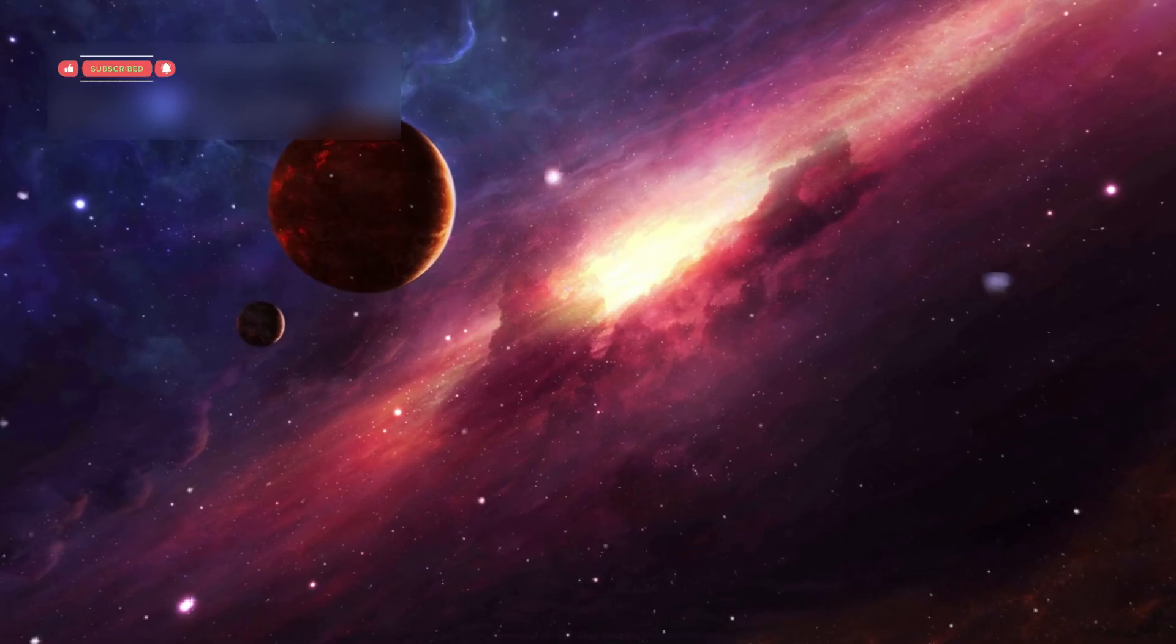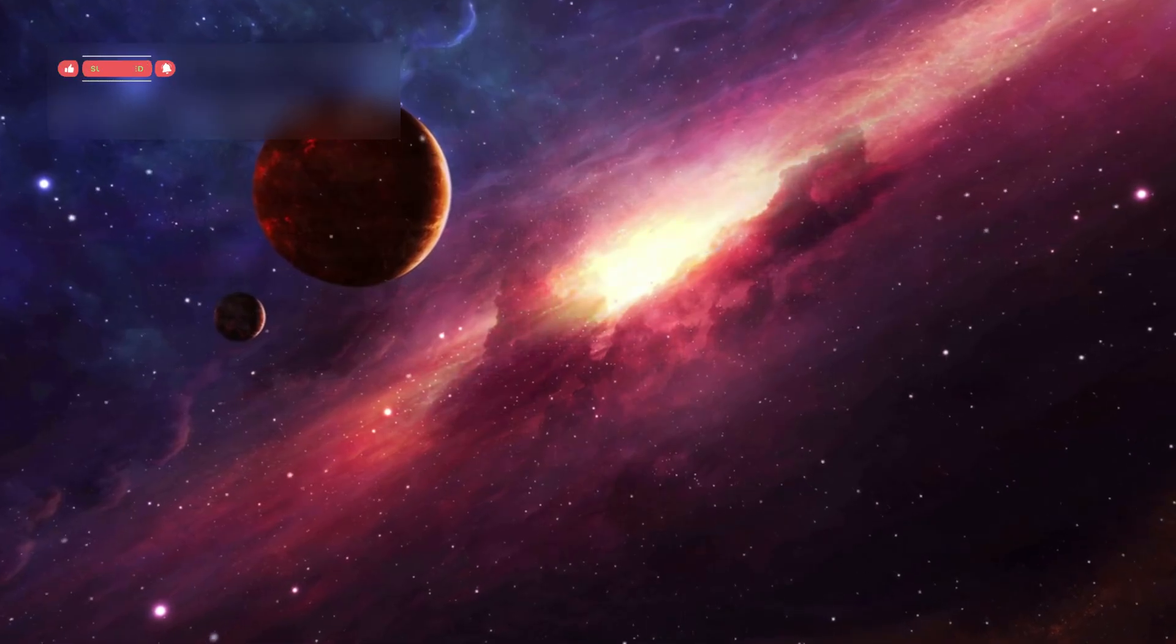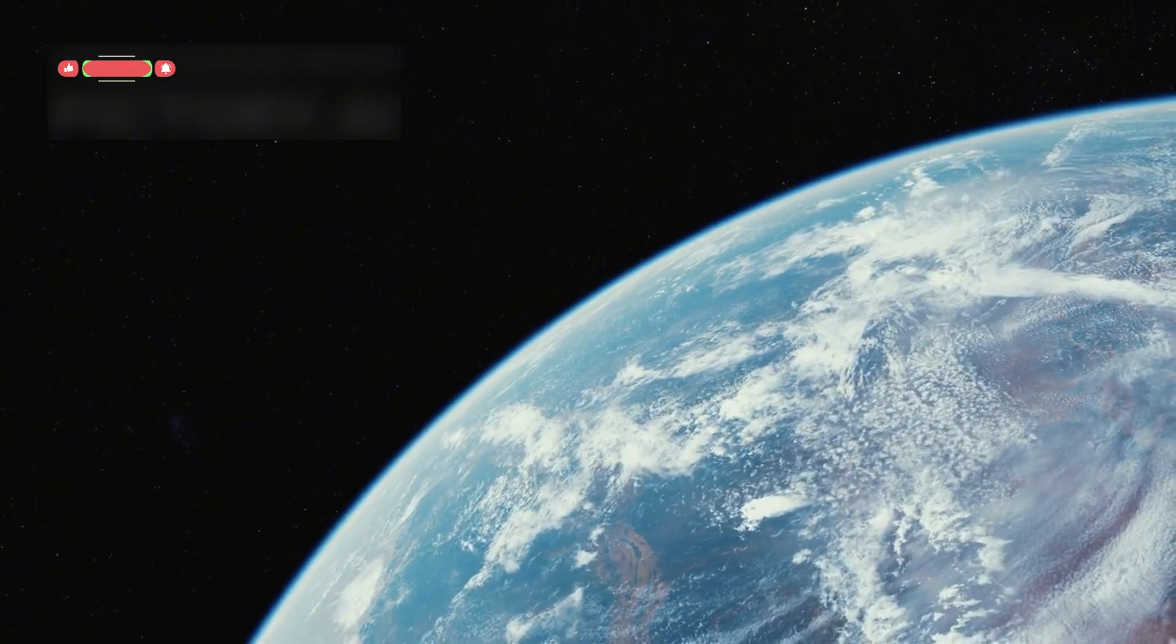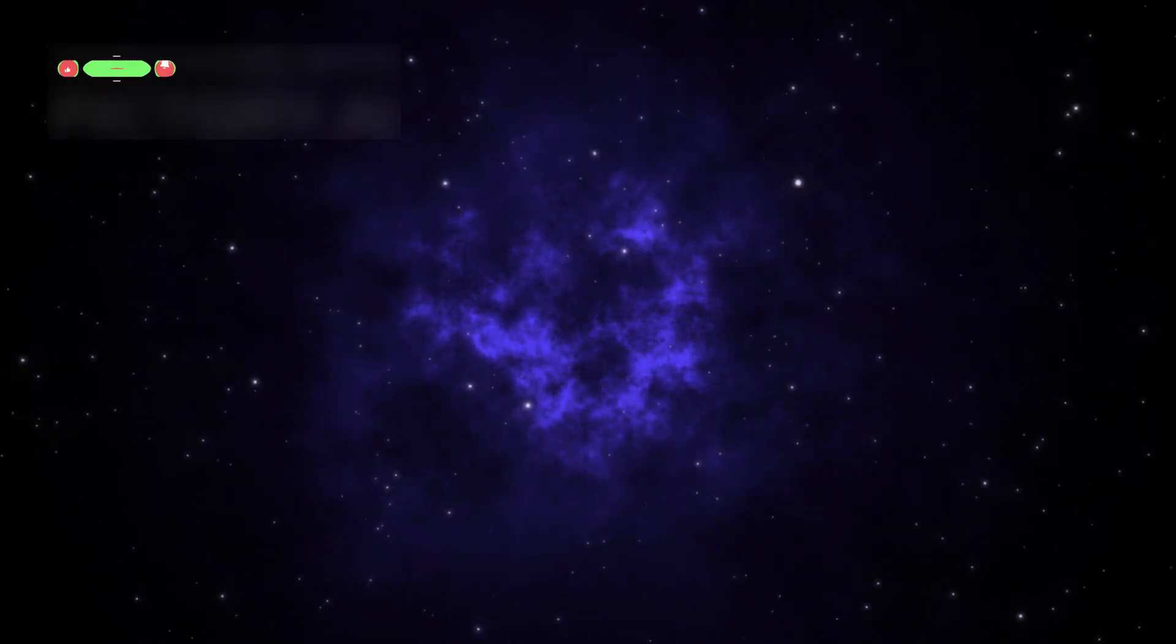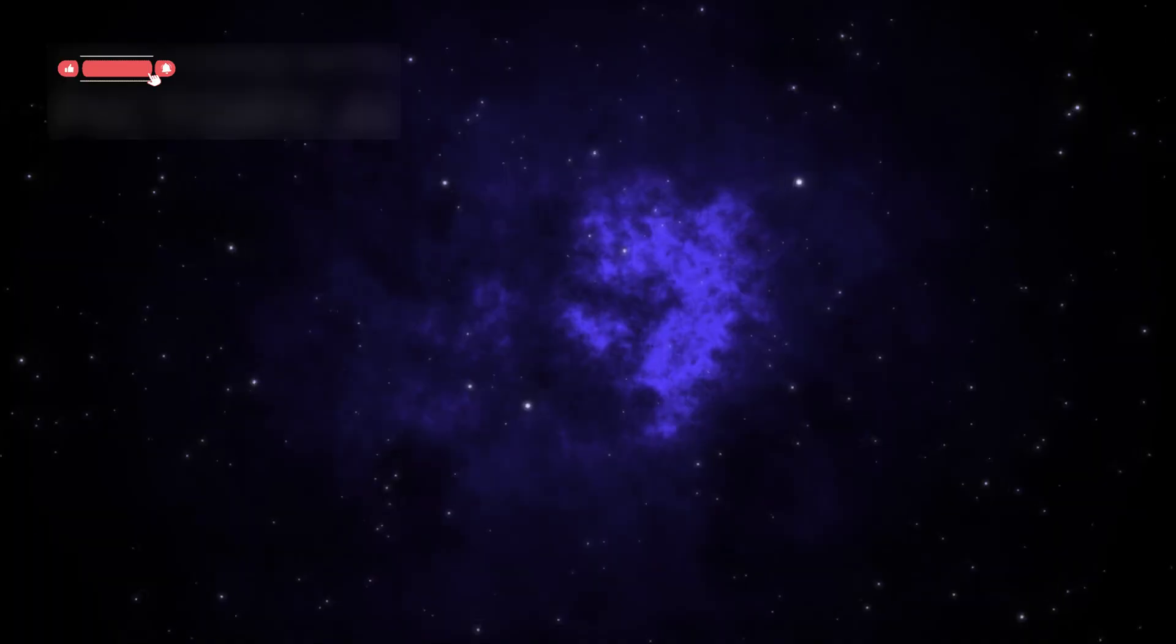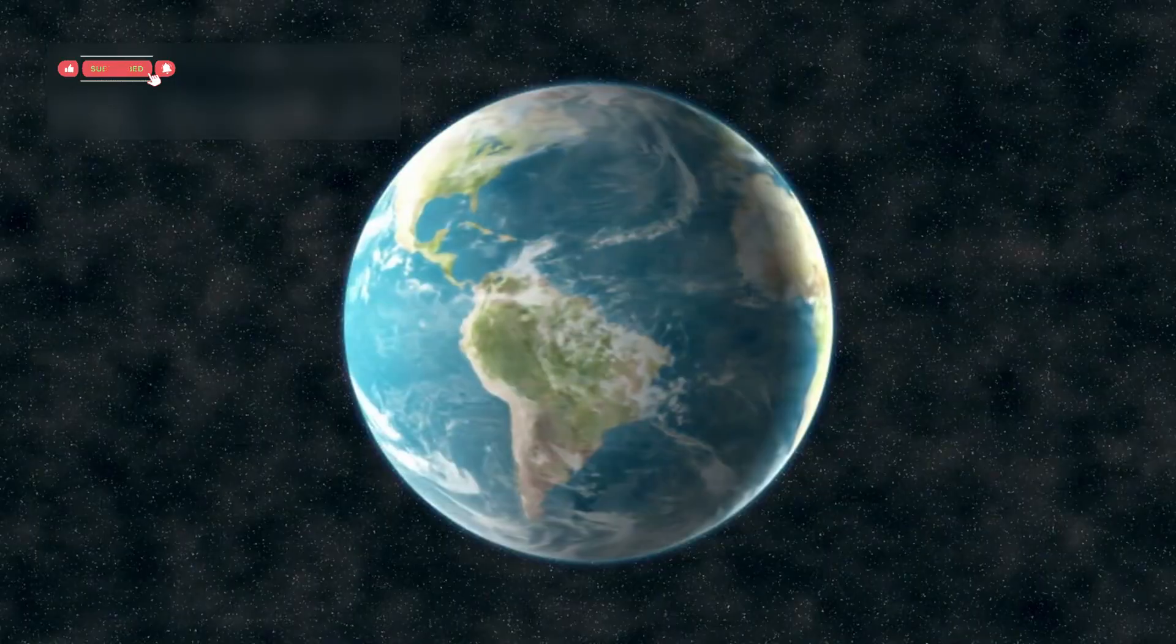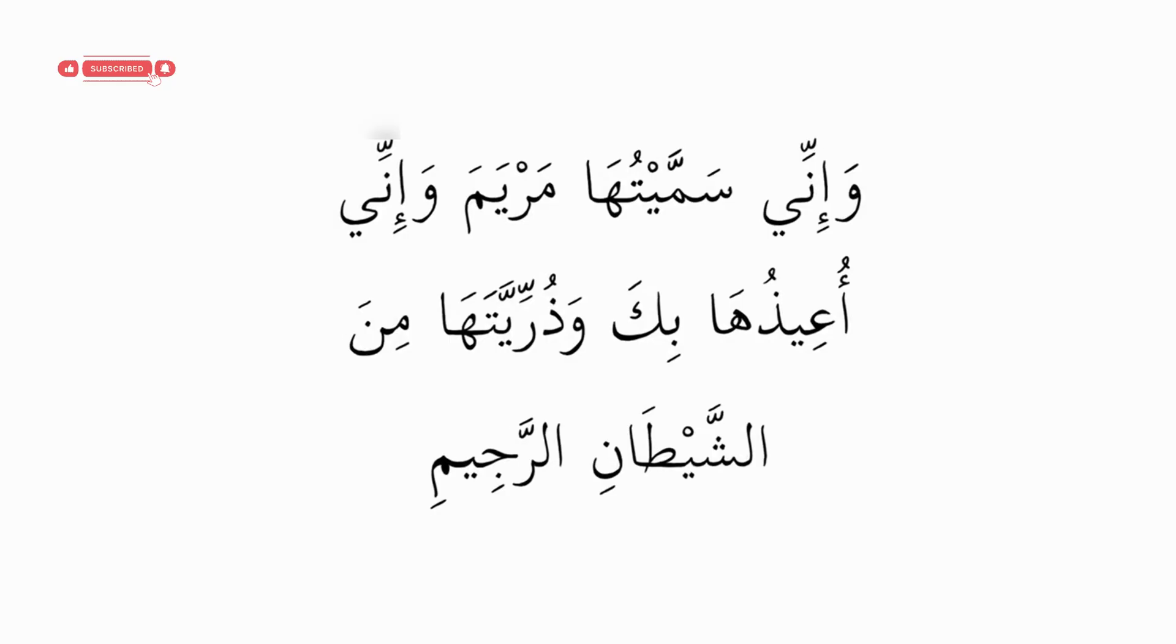In 1990, as Voyager 1 was leaving the solar system, it did something very special. NASA commanded it to turn around and take a picture of Earth from 4 billion miles away. In that image, called the Pale Blue Dot, Earth appears as a tiny speck of light in the vastness of space. That single photograph became iconic because it shows our world's fragility and smallness. Astronomer Carl Sagan famously called it the Pale Blue Dot in his book, using it to remind us how delicate and precious our planet is in the cosmic ocean.